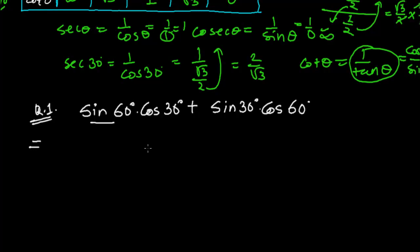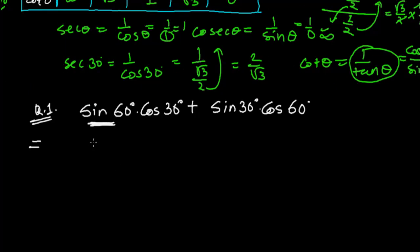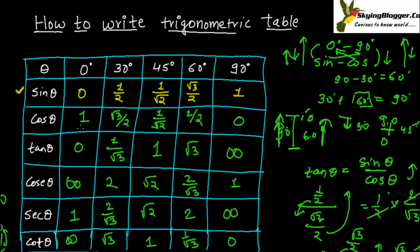Sine 60 - what is the value of sine 60? Let me see from this table. Sine 60 is root 3 upon 2, so sine 60 is root 3 upon 2 multiplied by cos 30. What is the value of cos 30? Cos 30 is again root 3 upon 2, so root 3 upon 2 times root 3 upon 2 means root 3 times root 3.